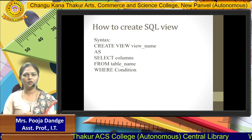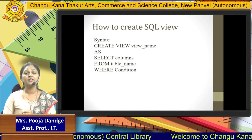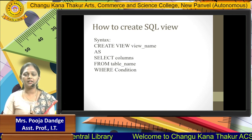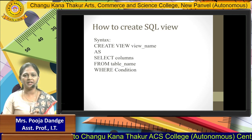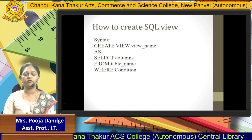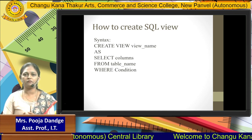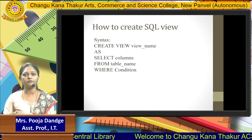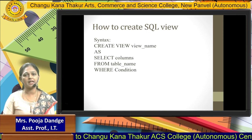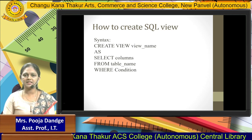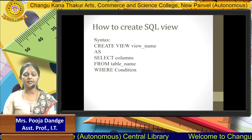Now, how do we create a view in SQL? The syntax is: CREATE VIEW view_name AS SELECT columns FROM table_name WHERE condition. The CREATE keyword is a DDL statement. VIEW is a keyword that tells the database to create a view. The view name is specified by the user based on their choice. AS is a keyword, and SELECT is the statement used to choose columns.